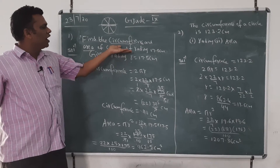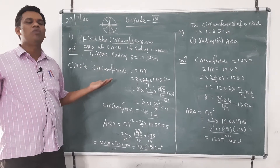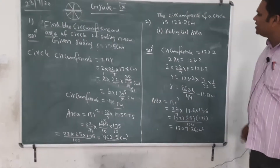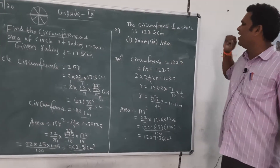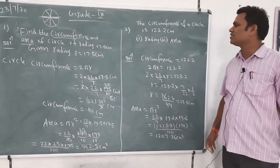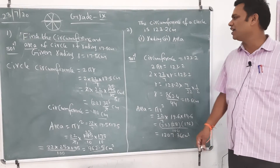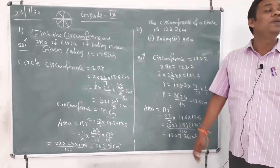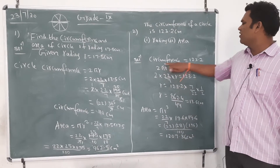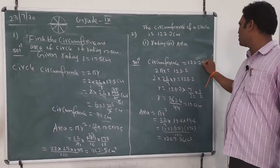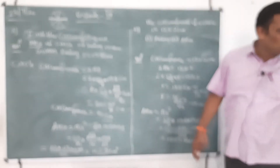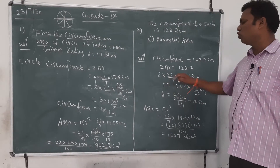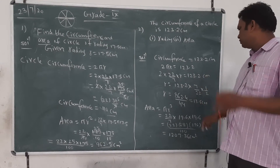So, they gave the radius and we found the circumference using formula 2πr and the area using πr². Now, another problem: the circumference of a circle is 123.2 centimeters. Find the radius and area. These are application-type problems — a bit of twisting. Given: circumference = 123.2 centimeters. The circumference formula is 2πr, so we equate: 2 × (22/7) × r = 123.2 centimeters.